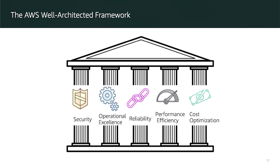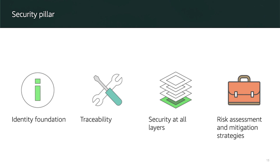In the security pillar, we address the ability to protect information systems and assets while delivering business value through risk assessment and mitigation strategies. Your architecture will present a much stronger security presence if you implement a strong identity foundation, enable traceability via CloudTrail, apply security at all layers, automate security best practices, and protect data in transit and at rest.